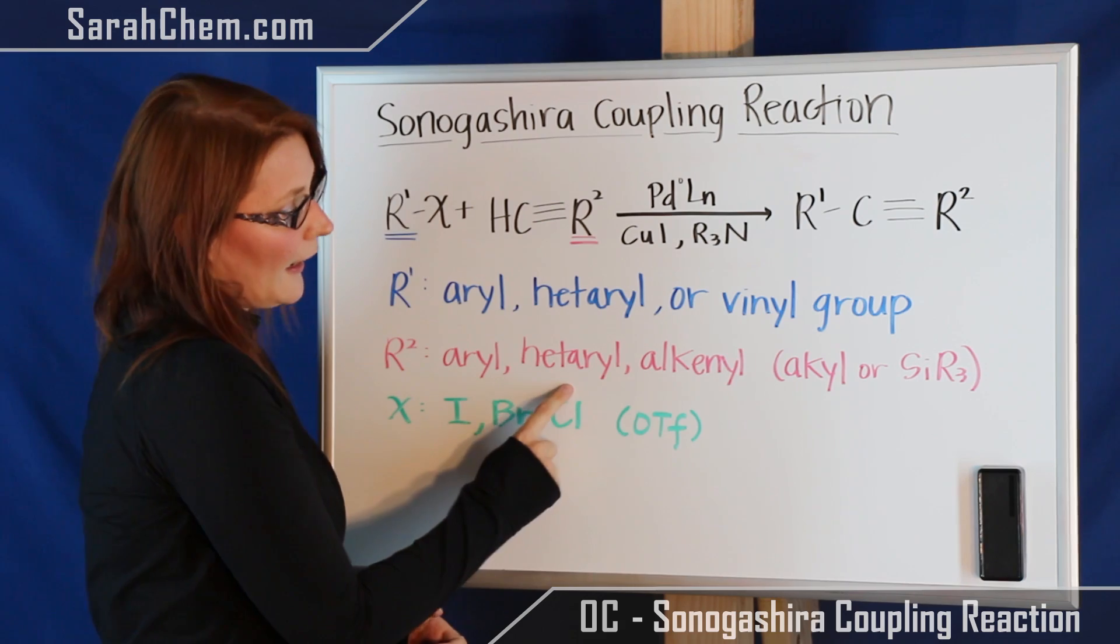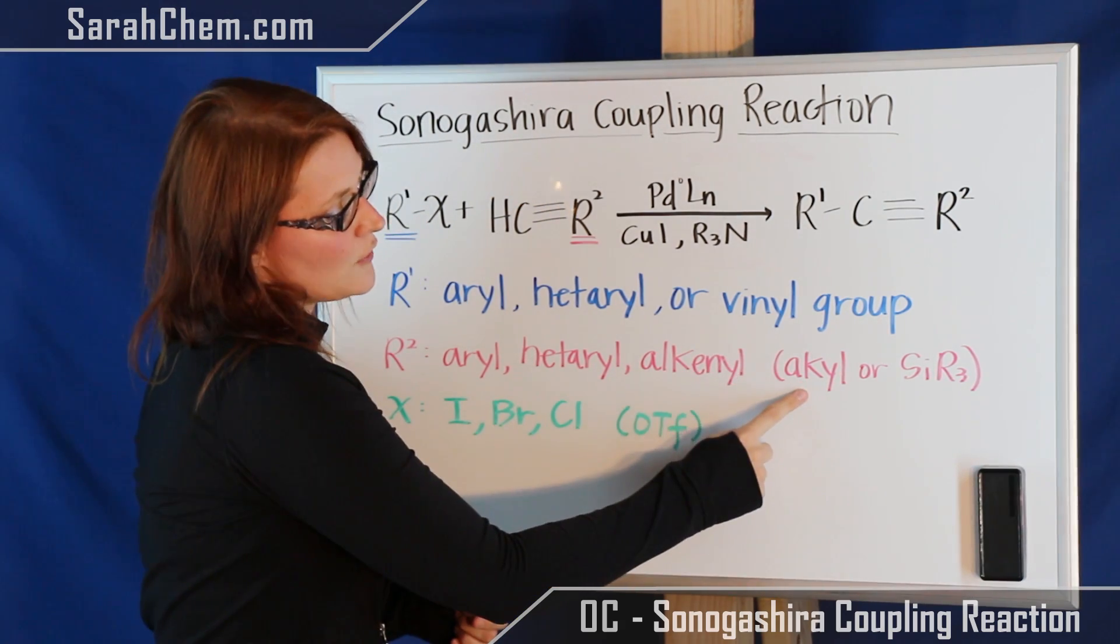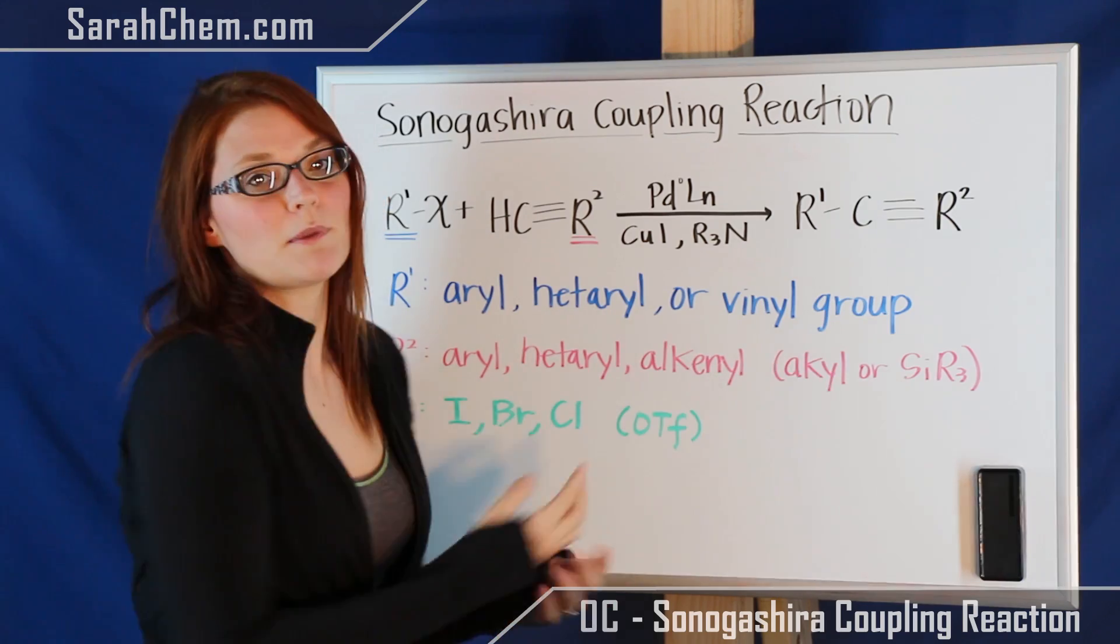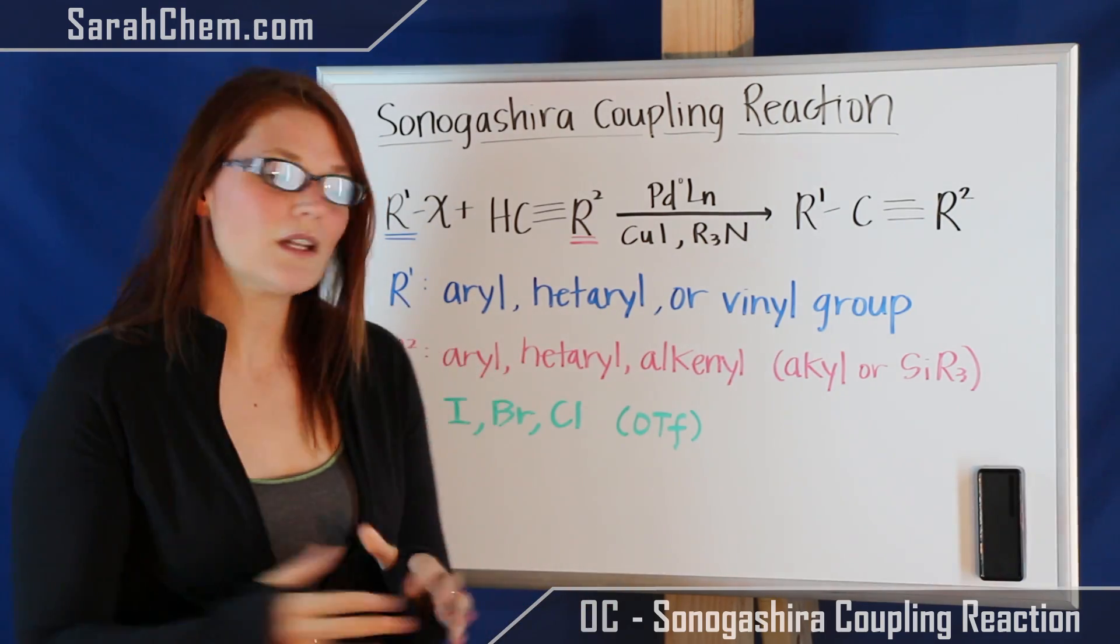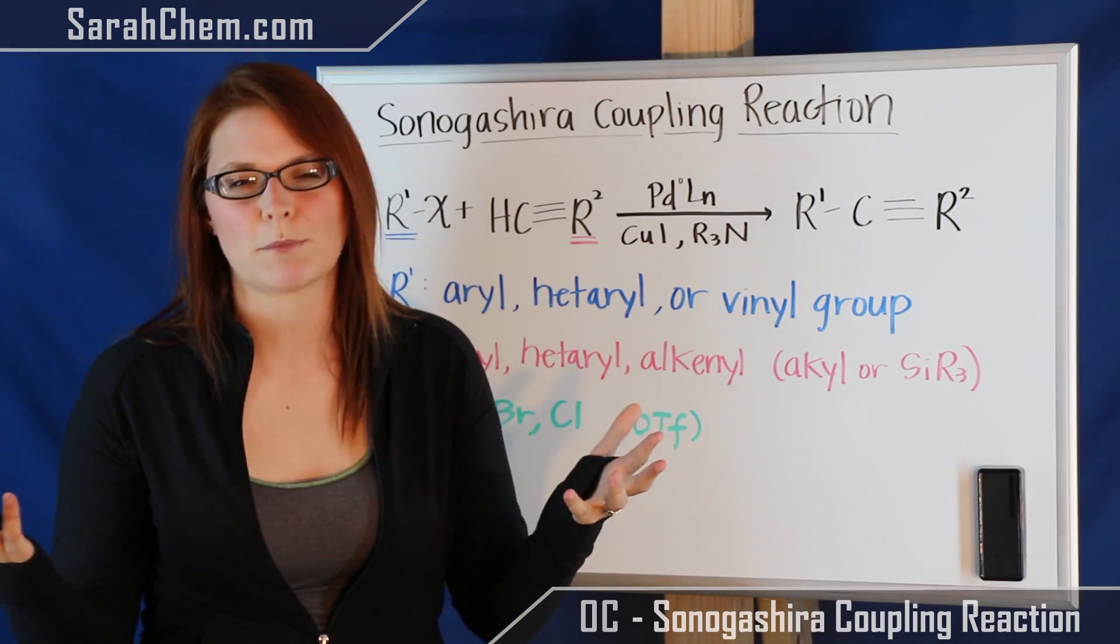With this R group attached to it, we're going to have it be aryl, hetaryl, or it can be alkenyl. There has been a lot of research where we've also had that be an alkyl group or it can be an organosilicon. So just realize that we can expand beyond and include things that may not often be seen in your textbooks.